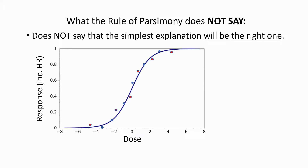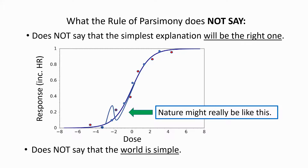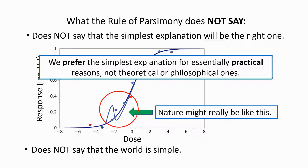The smooth curve represents the simplest explanation, but the rule of parsimony does not say that the simplest explanation will be the correct one. It is quite possible to draw any of an infinite number of mathematical curves through those data points. Nature might really follow a mathematical function that is far more complicated than the simple one we initially chose. The rule of parsimony also does not say that the world itself is truly simple. We would prefer the simpler curve initially for essentially practical reasons, not for theoretical or philosophical ones.